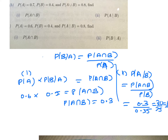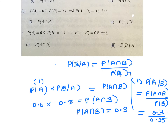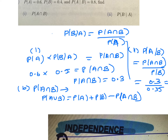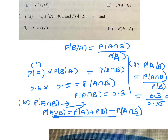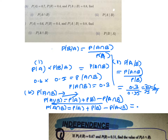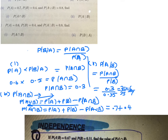Let's look at the next question. We want to find the probability of A intersection B. We have the probability of A union B, and the formula is: probability of A union B equals probability of A plus probability of B minus probability of A intersection B. Rearranging, the probability of A intersection B equals probability of A plus probability of B minus probability of A union B. So that's 0.7 plus 0.4 minus 0.8, which equals 0.3.